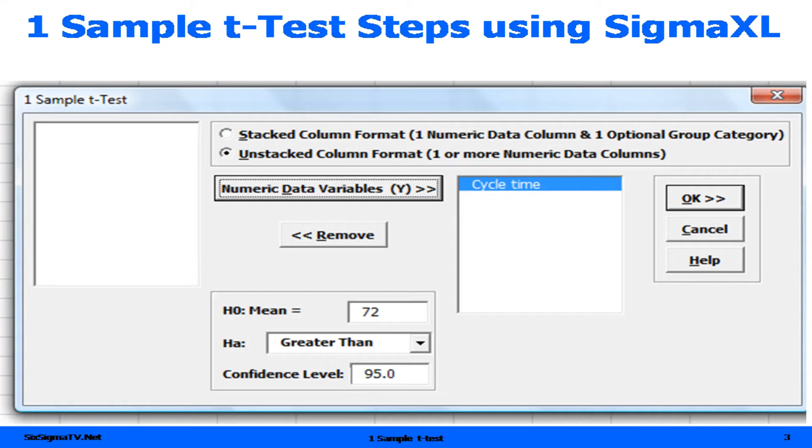We would look at the null hypothesis, where the mean is 72. We would select the alternate hypothesis, in this case greater than. Our confidence level defaults to 95%, which is another way of saying that we would accept an alpha risk of 5%.